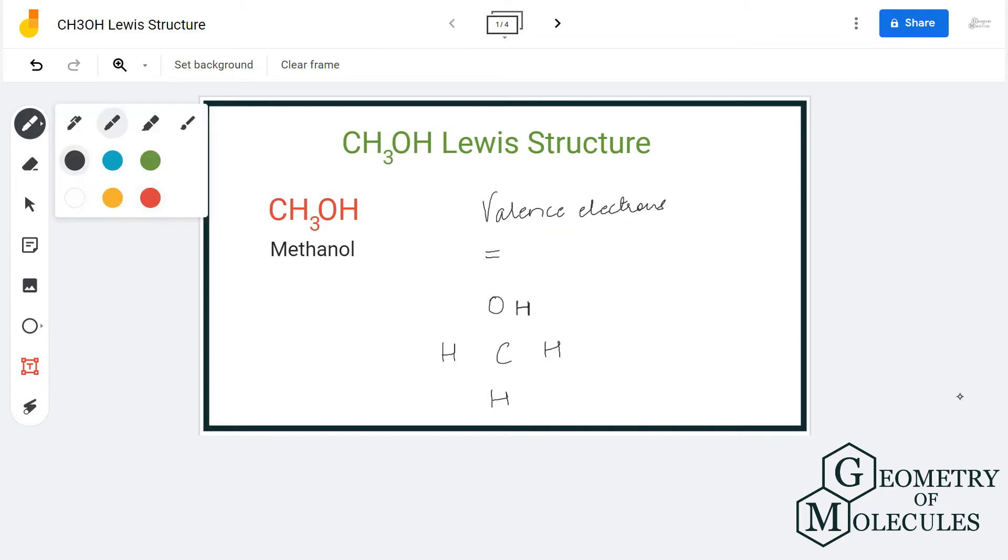Carbon has four valence electrons, each hydrogen will have one valence electron, and the OH group here will have seven valence electrons. So in total, we have 14 valence electrons for this molecule.